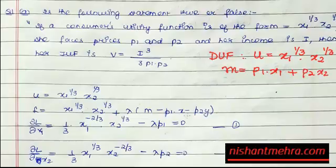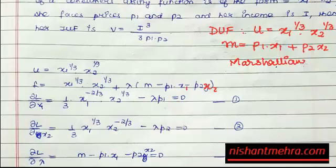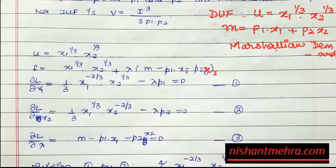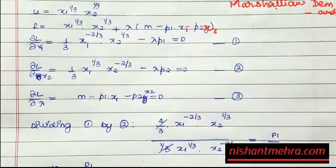So when you want to move from a direct utility function to an indirect utility function, you have to find something called Marshallian demands. You compute the Lagrangian conditions: ∂L/∂x1, ∂L/∂x2, and ∂L/∂λ.